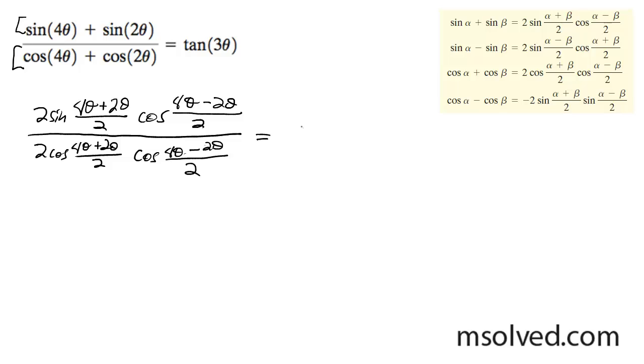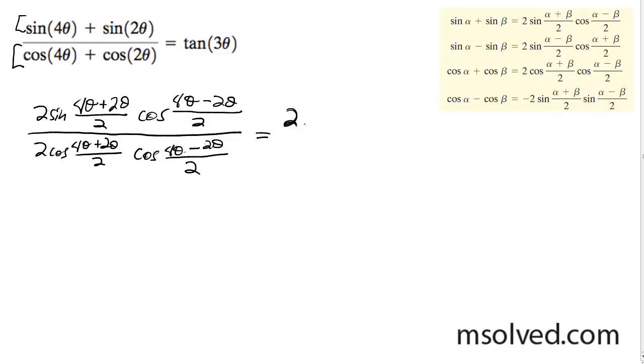So multiplying out the numerator on top, I'll simplify it first. I get 2 sine 6 theta divided by 2, cosine 2 theta divided by 2. On the bottom, 2 cosine 6 theta divided by 2, cosine 2 theta divided by 2.